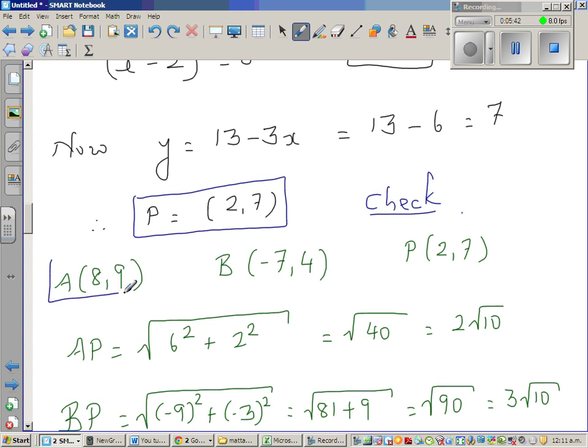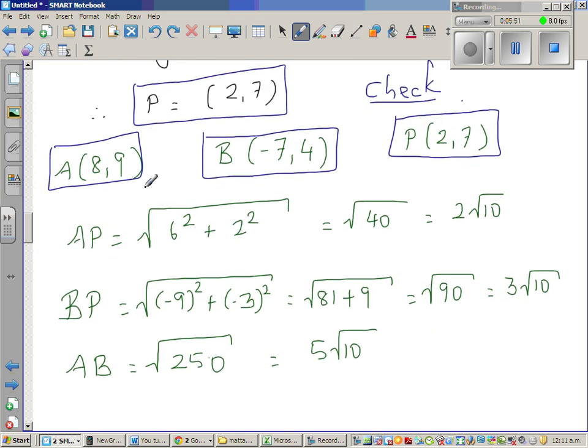Now this is to check whether our answer is right or whether the answer makes sense. So we know A is (8,9), B is (-7,4), and we have found P. So AP, using the distance formula, 8 take away 2 is 6 squared, and 9 take away 7 is 2 squared. So 36 plus 4 is 40. Now 40 can be written as square root of 4 times square root of 10, and that's how I wrote 2 root 10.